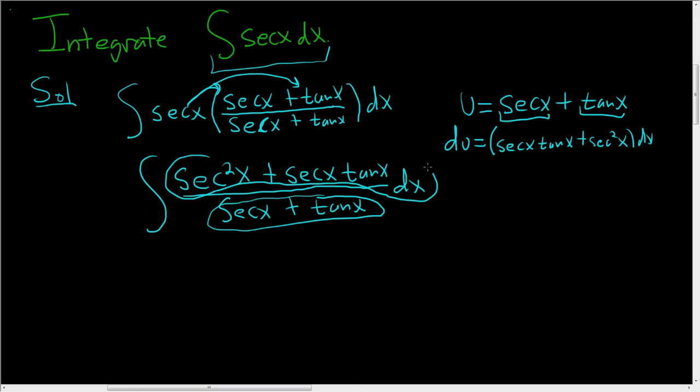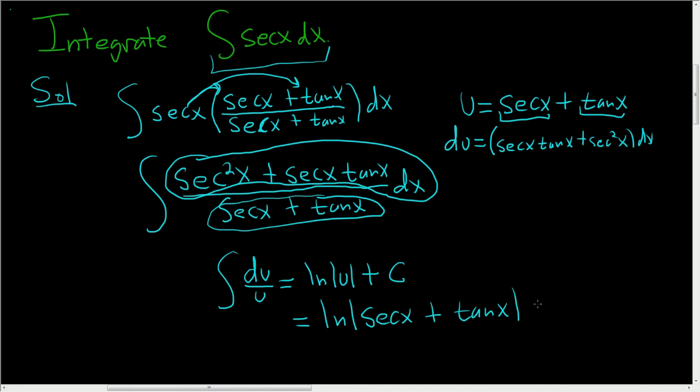It's a beautiful problem. We end up with du over u. That's the natural log of the absolute value of u plus c, which is the natural log of the absolute value of secant x plus tangent x plus a constant c.